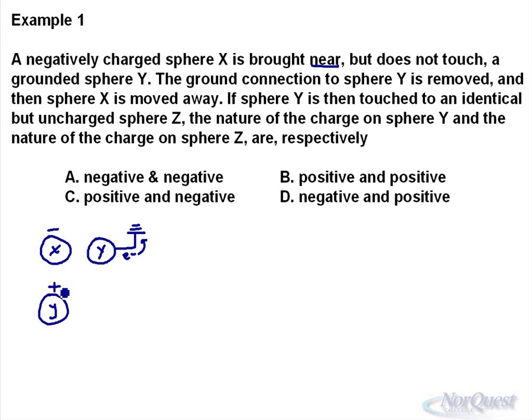Sphere X is moved away. Now if we take sphere Y and touch it to an identical sphere Z, and it's neutral, what will happen then is you will then get some of the electron charge to try to neutralize this. So electrons will leave Z and go to Y to try to redistribute.